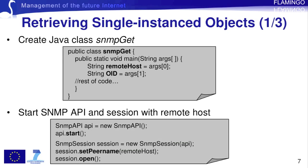As a next step, we create a new instance of the SNMP API class called api in lower case, and we start the created API by invoking the start method. Then we create a new SNMP session, which is the basic communication class for performing SNMP operations, passing the API object as an argument. Using the setPeerName method of the SNMP session class, we set the address of the remote host. Once this is done, we can open the session to communicate with the SNMP agent by invoking the method open.